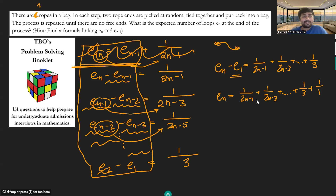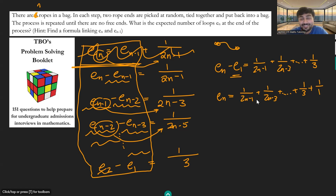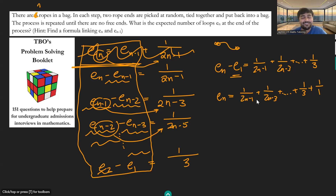This solution introduces several cool bits of math. We first used the law of conditional expectation, which you may or may not have seen before, and then through those computations we end up with a nice recurrence relation, which we solved in a really elegant way using telescoping sums. There's something really satisfying about a bunch of terms cancelling out.